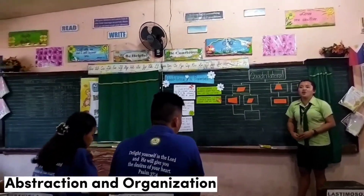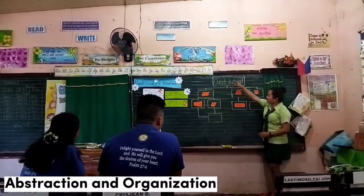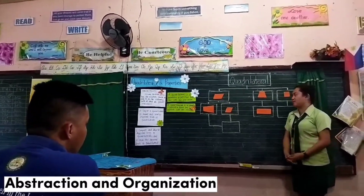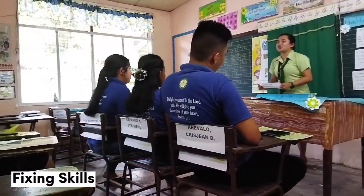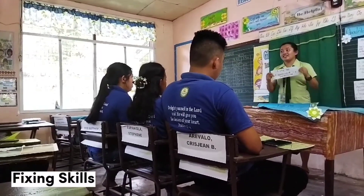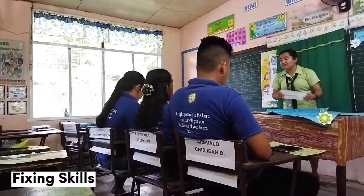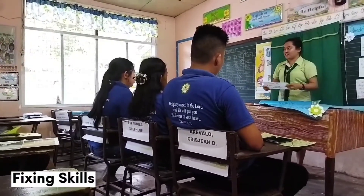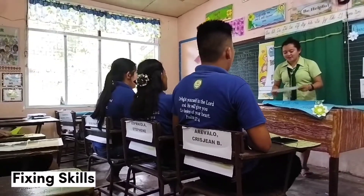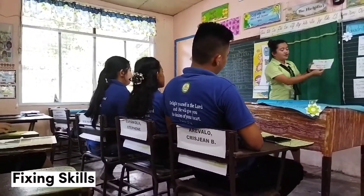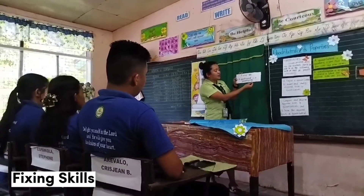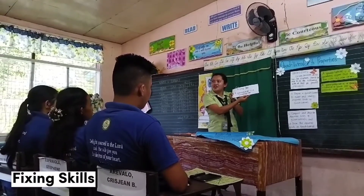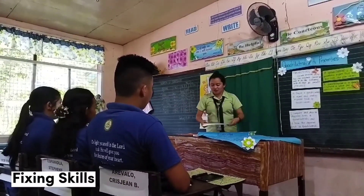Very good. So now we already know the names of these quadrilaterals, their properties, and their relationships. Okay, our next activity is entitled 'Is it a Fact or a Bluff?' I have here statements — say fact if it is true and bluff if it is false. Do you understand? Yes, ma'am. Okay, first sentence: a quadrilateral is a parallelogram. Is it a fact or a bluff? Bluff. Very good. It is bluff.